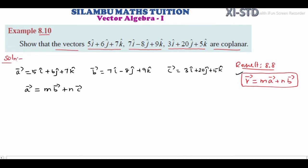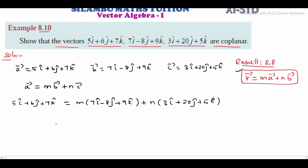Now we apply the result: a vector = m(b vector) + n(c vector). So we have 5i + 6j + 7k = m(7i - 8j + 9k) + n(3i + 20j + 5k). Multiplying through: 5i + 6j + 7k = 7mi - 8mj + 9mk + 3ni + 20nj + 5nk.